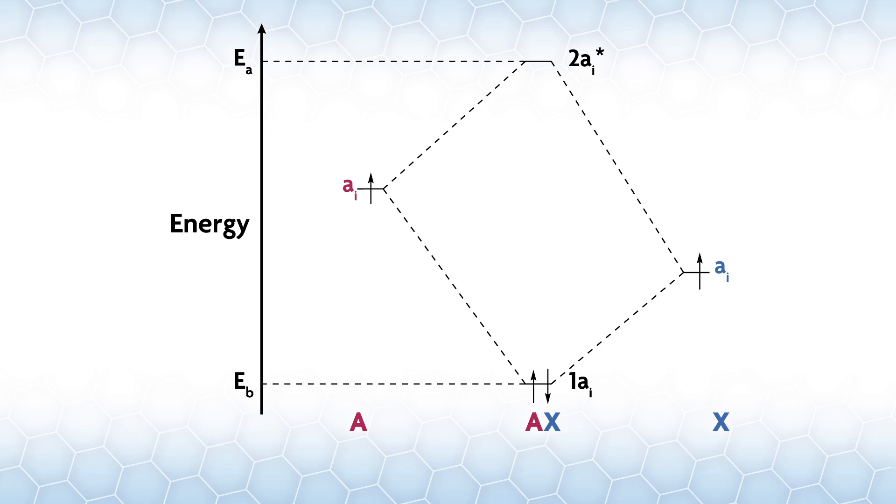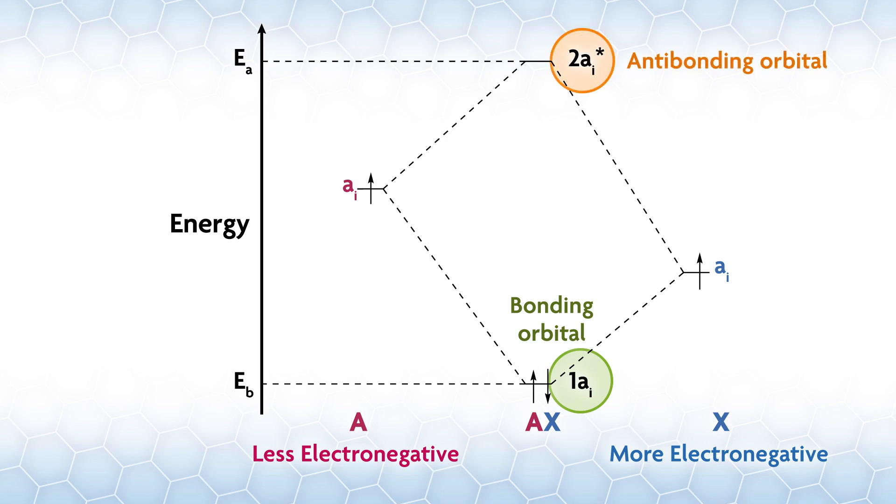Let's say you're forming the MO diagram for a diatomic AX, where X is the more electronegative atom. Both A and X have one orbital that happens to be in the same irreducible representation. When the orbitals mix, you will make bonding and antibonding orbitals. We'll label the bonding one 1Ai because it's lower in energy than the antibonding one 2Ai star, where the star indicates that this is clearly an antibonding orbital.